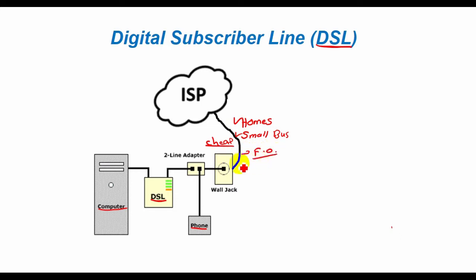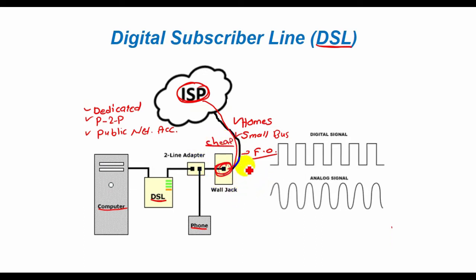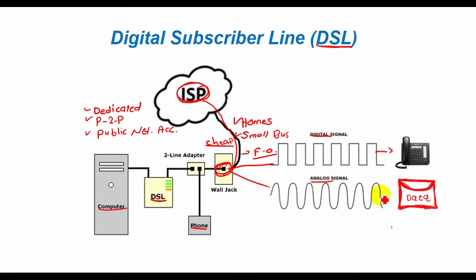DSL provides dedicated point-to-point public network access. This DSL connection is typically between a network service provider's central office and the customer site. With DSL, a different frequency can be used for digital and analog signals, which means that you can talk on the phone while you upload data.